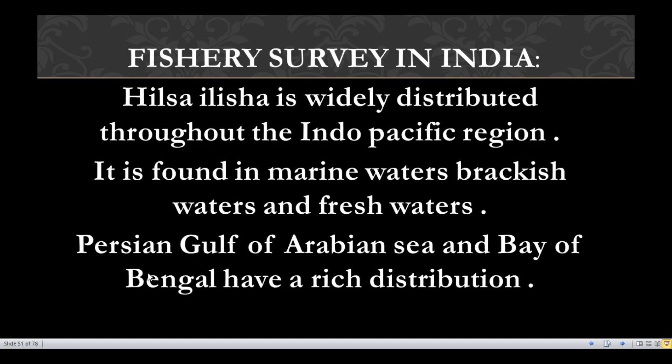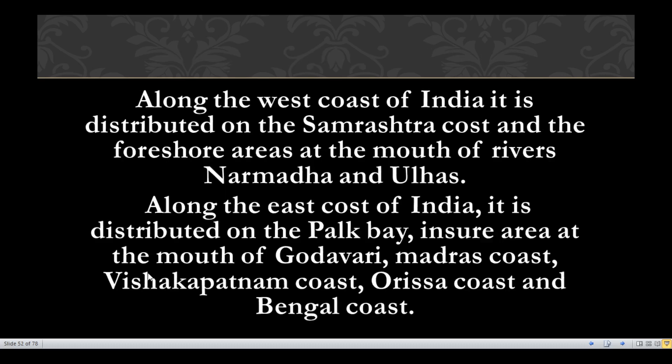Hilsa ilisha is widely distributed throughout the Indo-Pacific region. It is found in marine waters, brackish waters, and fresh waters. Its distribution includes the Persian Gulf, Arabian Sea, and Bay of Bengal. Along the west coast of India, it is distributed on the Saurashtra coast and the foreshore areas at the mouth of rivers Narmada and Ulhas.